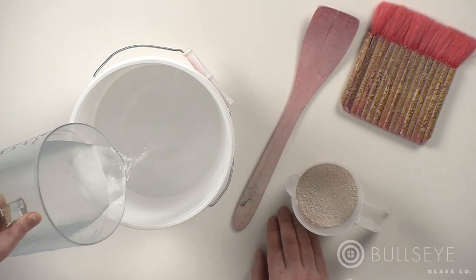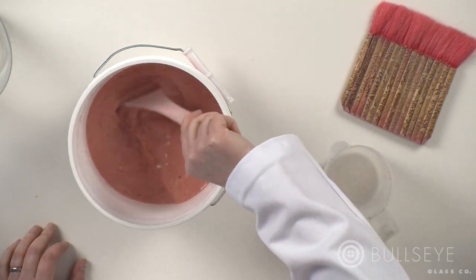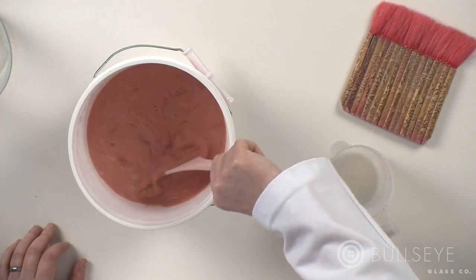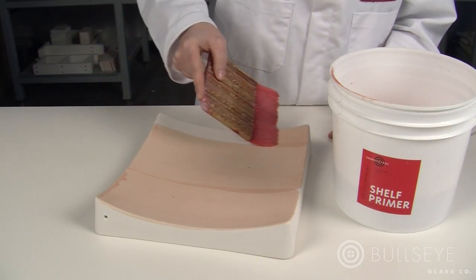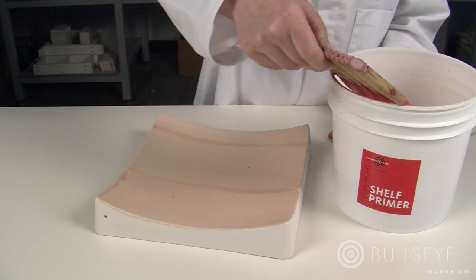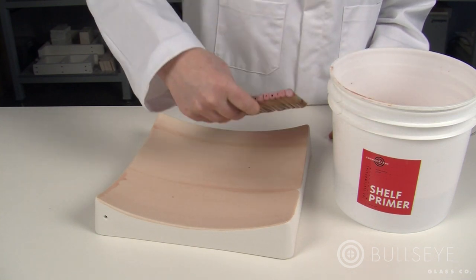If preparing a ceramic mold with Bullseye shelf primer, mix five parts water to one part dry powder. Apply five layers of primer, coating surfaces that will come in contact with glass. Use a natural hair, fine bristled brush such as a hake brush.